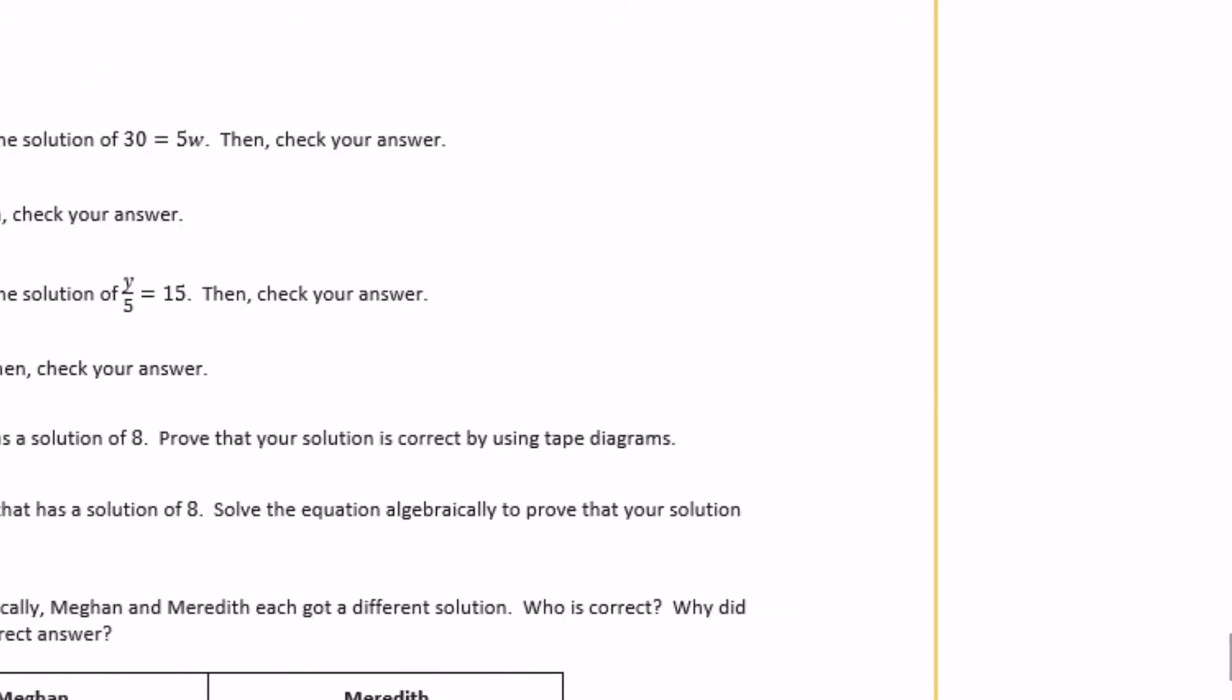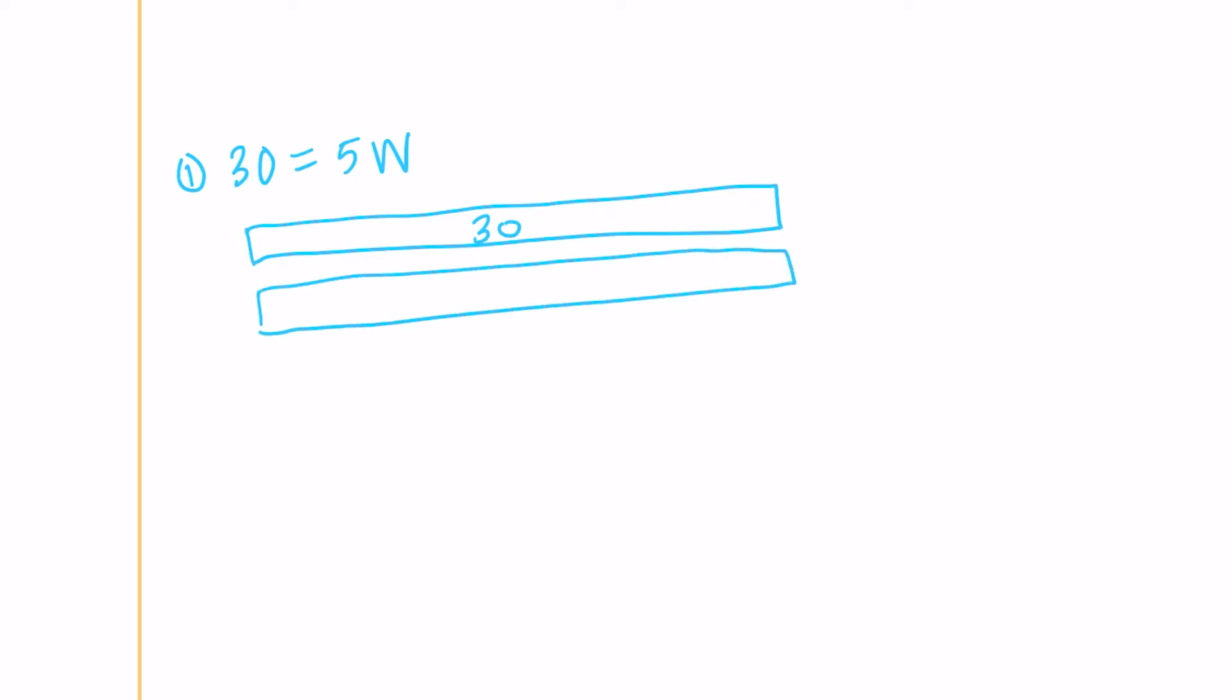It wants us to use tape diagrams, so I'm going to come over here. This is number 1, so it's 30 equals 5w. So I'm going to draw two tape diagrams. We're going to have 30, and then it's equal to 5w. So I'm going to draw another one and put 5w's in them. I'm going to split it into 5, and we have 5w.